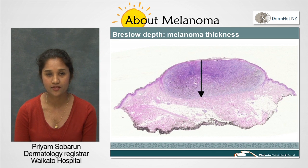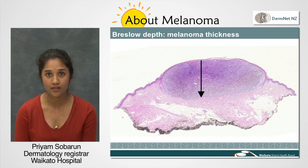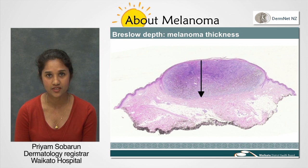If there is ulceration, then the measurement is taken from the base of the ulcer to the deepest part of the melanoma. The thinner the Breslow depth, the better the outcome. These three features are very important and form part of the T in staging of a melanoma.